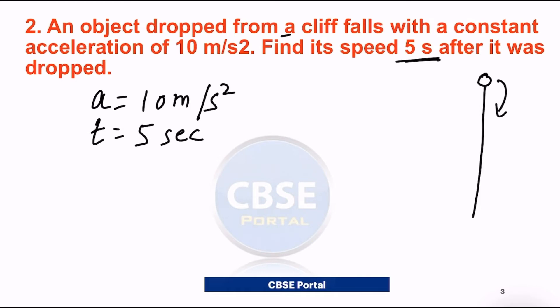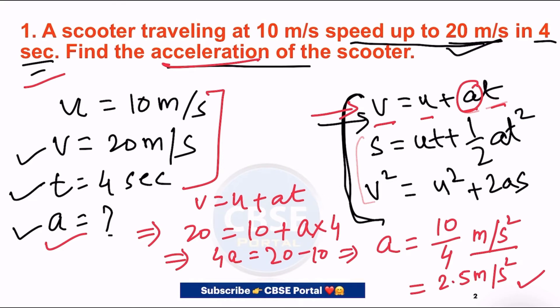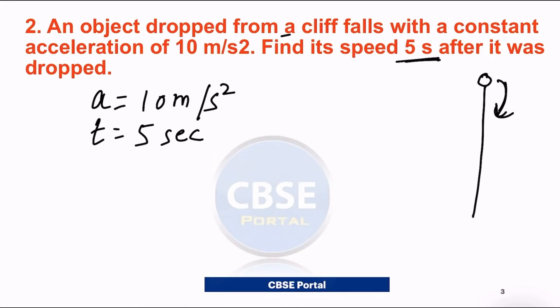Out of the three equations, which one applies here? Look carefully at what data is given. a is given, t is given, and one more thing to note: when the object is placed here at rest position, its initial velocity is zero. So u is zero meter per second. We need to find the speed, that is final velocity.